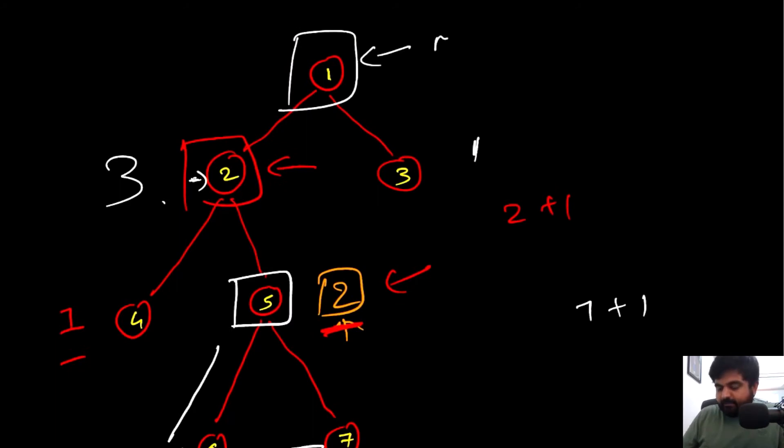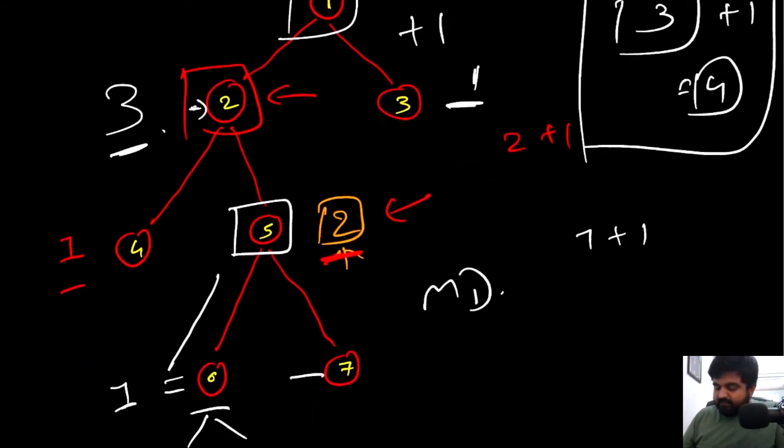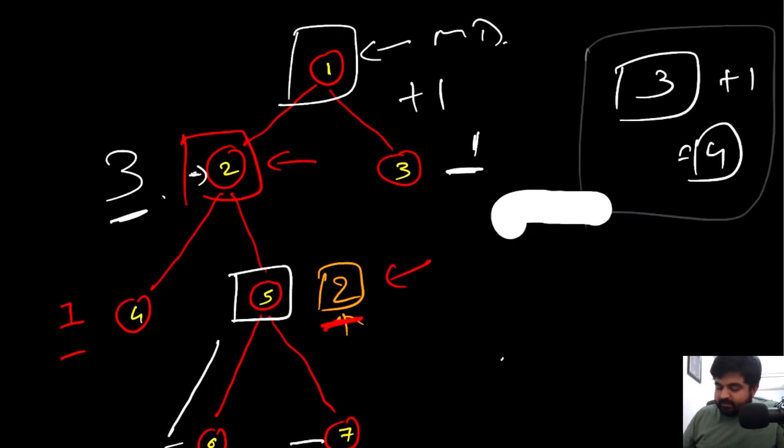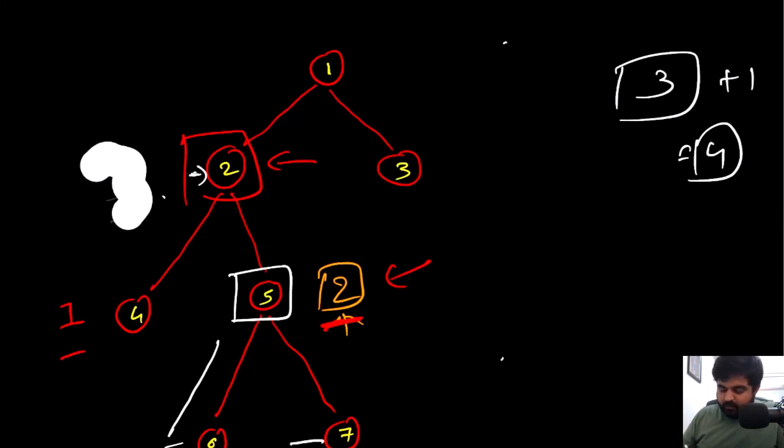Now we have these two information. It becomes pretty easy for us to identify what is the maximum depth at position number 1. All we have to do is take the maximum amongst these two values. The maximum value is 3, and we just plus 1. So 3 plus 1 gives us 4, and 4 would be the correct answer. That is what we are going to return. So the maximum depth we need to find, we can simply do it by using this method.